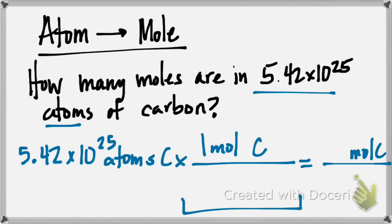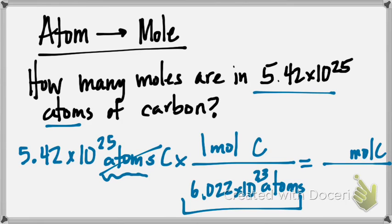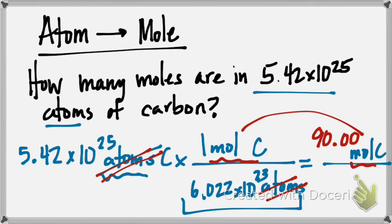I get to my ratio step or unit conversion step, and I want to get rid of atoms. If atoms is in the numerator, atoms has to go in the denominator. I go back to Avogadro's number, which means one mole of any substance equals 6.022 times 10 to the 23rd atoms. My atoms cancel, mole carbon is there, so I have exactly what I'm looking for. Once I plug in my numbers into my calculator, I should get 90.00 moles of carbon.